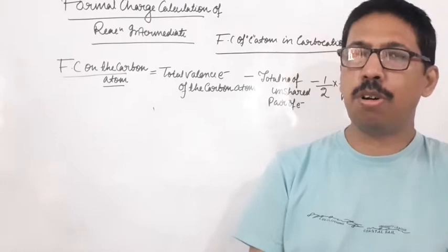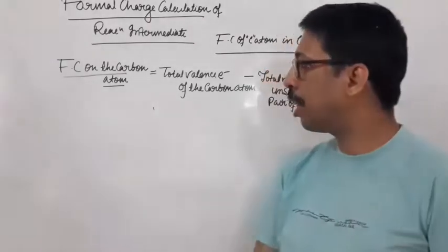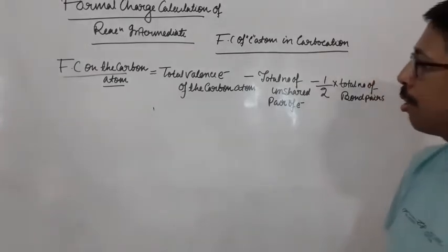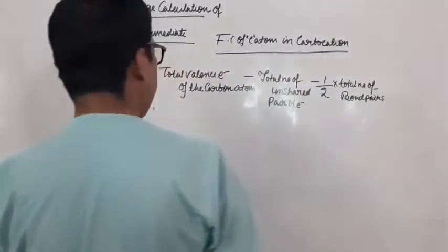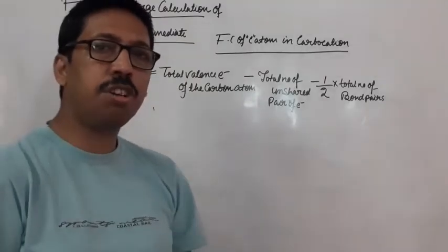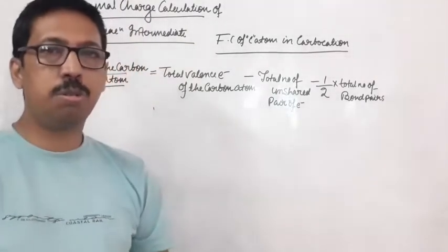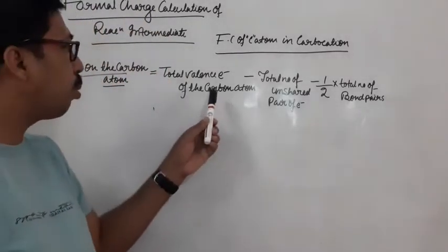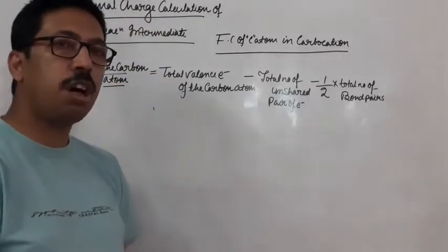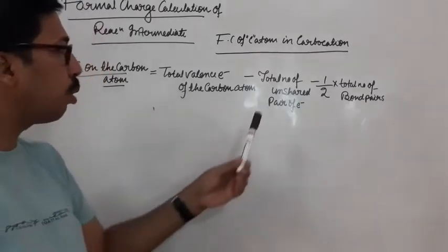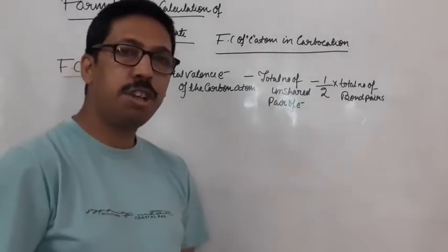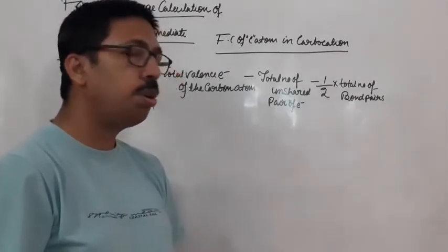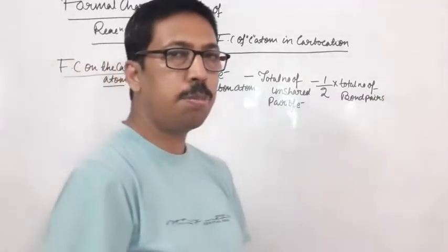So how do we find out formal charge? Formal charge on the carbon atom is equal to total valence electron of the carbon atom minus total number of unshared pair of electrons minus half into total number of bond pair electrons.